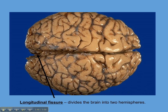Now I want to move on and talk about the cerebral hemispheres. There are two cerebral hemispheres and they're divided by something called the longitudinal fissure.